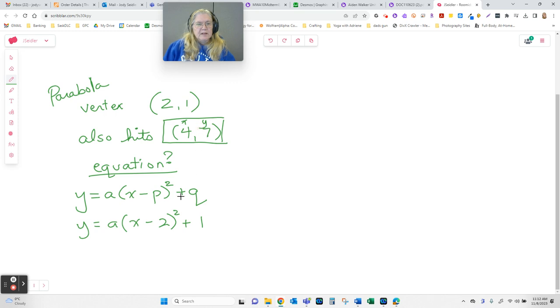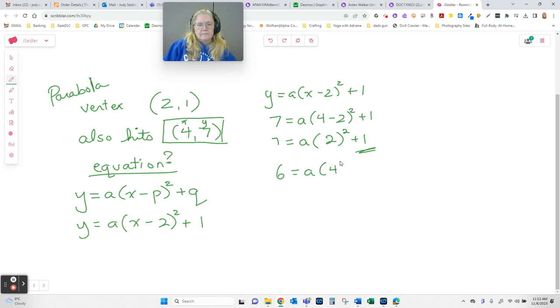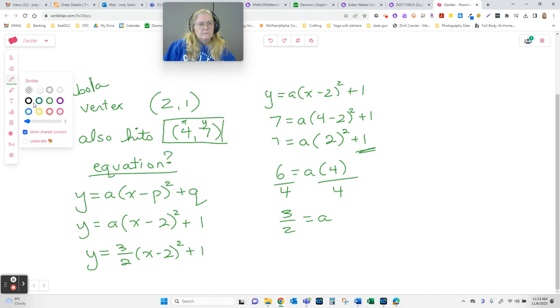And every ordered pair is really an x and a y value. So we can take this other ordered pair, and I can put 4 in for x and 7 in for y. Now this plus 1 I'm going to subtract. To get rid of the 4 I divide. Always reduce fractions. There's my a value. And what does that mean? Well, the equation of my function looks like that.